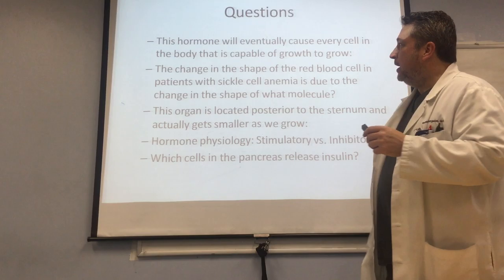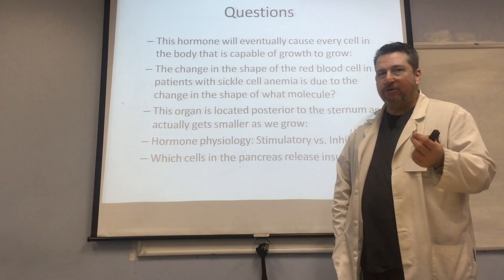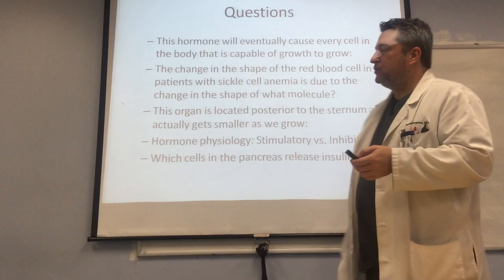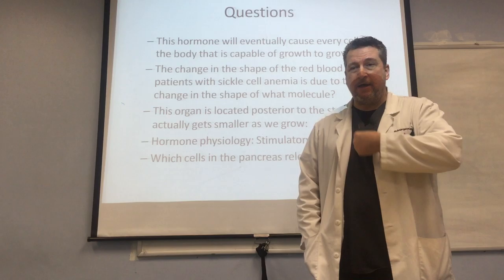When patients have sickle cell anemia, the shape of the red blood cell is changed and the hemoglobin molecule takes on a new shape because of that beta chain — it takes on more of a stick shape rather than the globe shape we know. This organ is located posterior to the sternum and is unique because it actually gets smaller as we get bigger — the opposite of every other organ. This, of course, is the thymus, located behind the sternal bones.